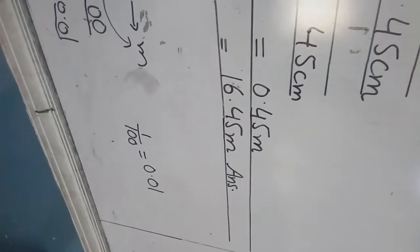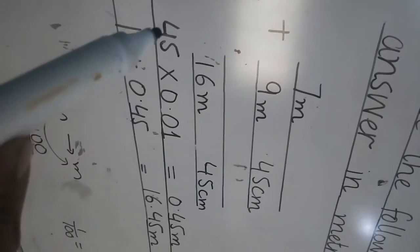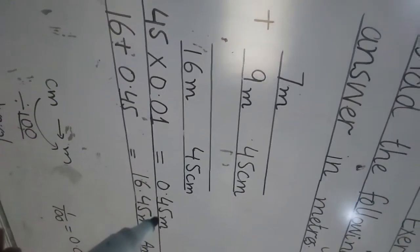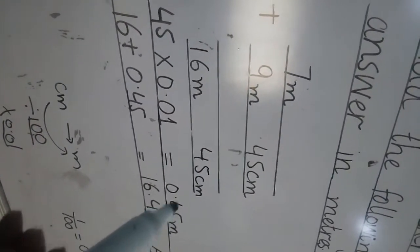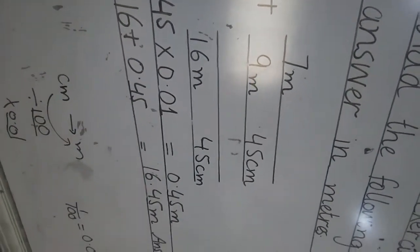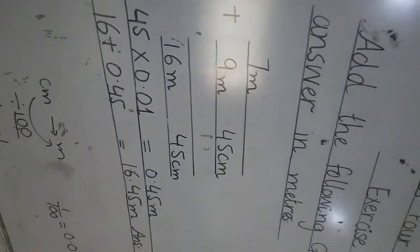By multiplying 45 centimeter with 0.01, we get this value in meters. Now this meter and the meters that is coming in answer, we will add these two meters and we get the answer. Is it clear?